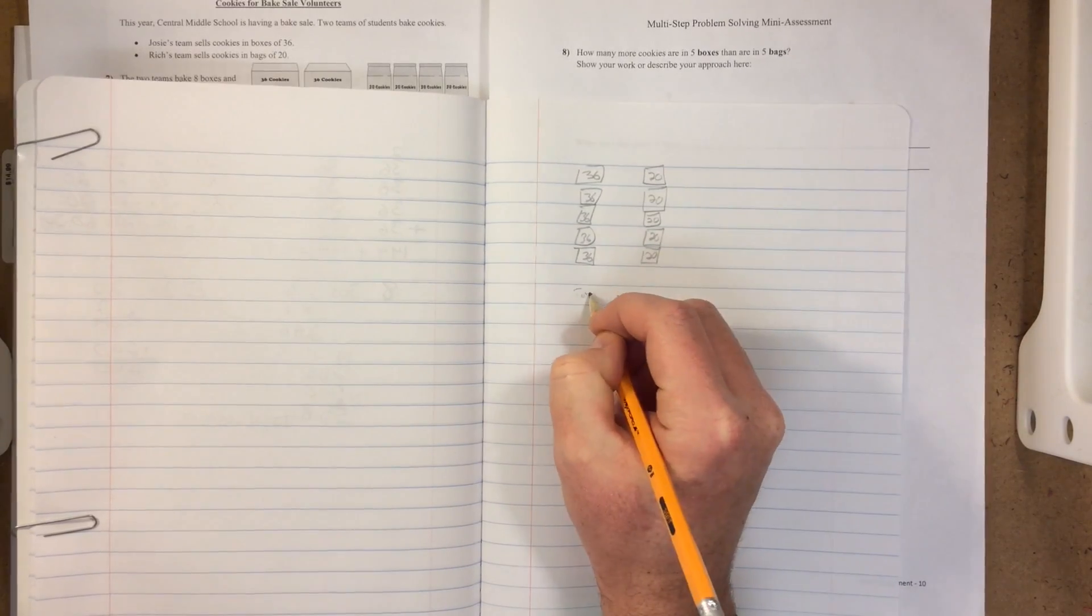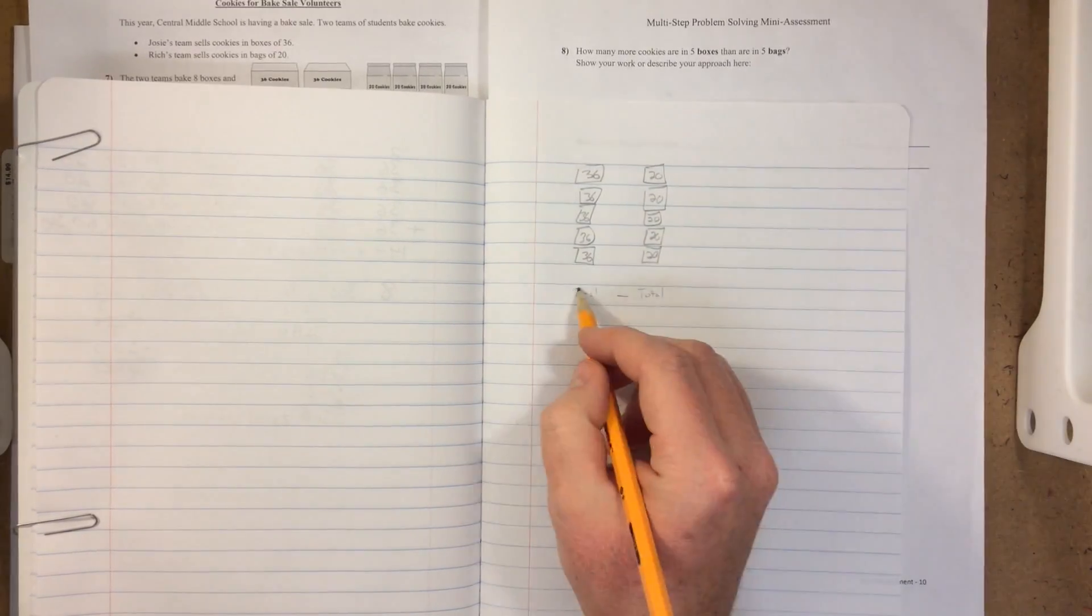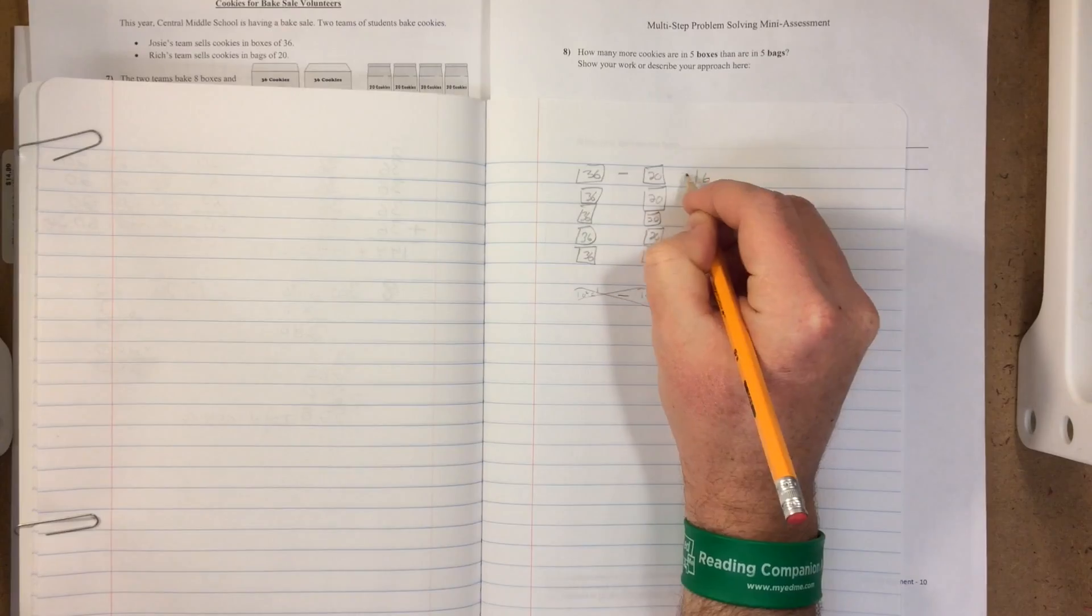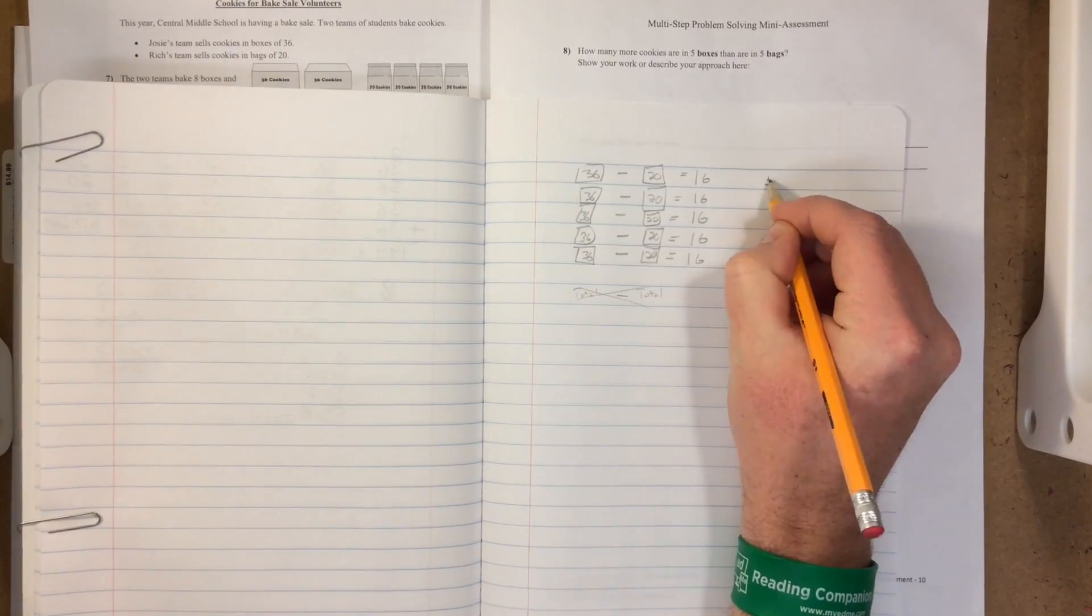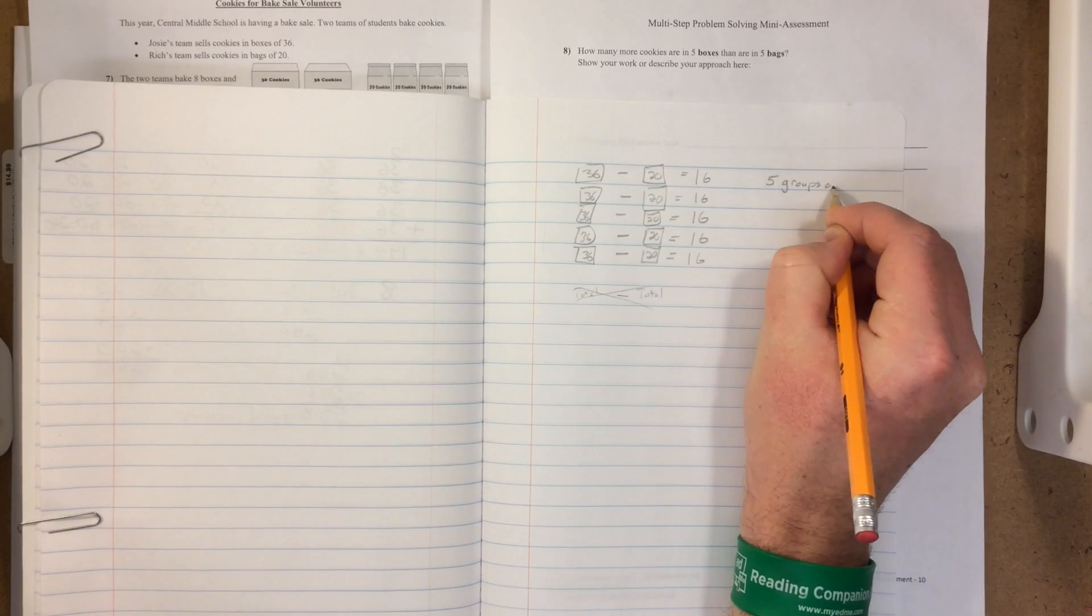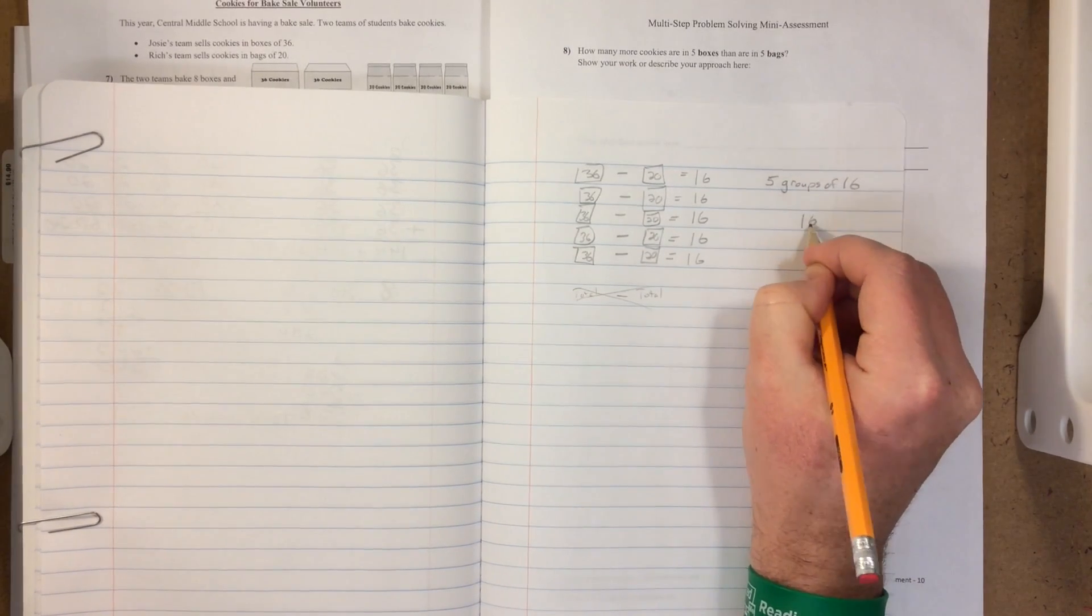It's simpler actually to look at the structure here. 36 minus 20 is 16, and 36 minus 20 equals 16 for all of these equations. And that gives us the difference of 16 five times - five groups of 16.